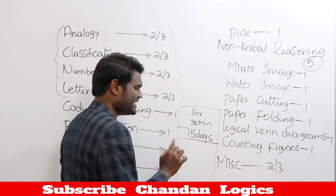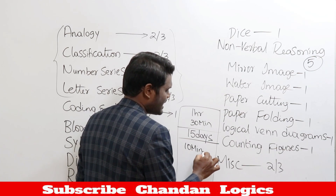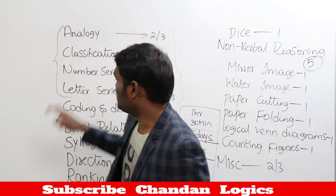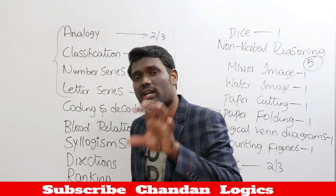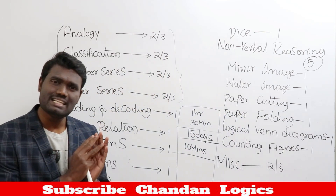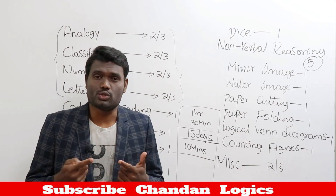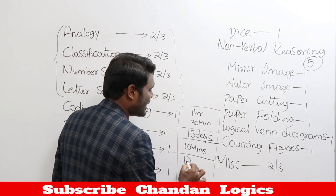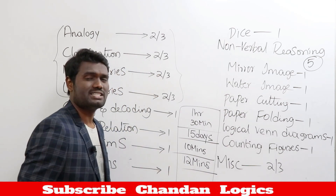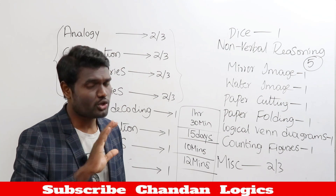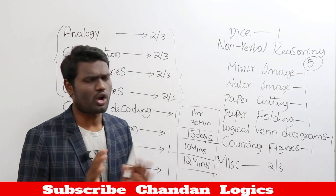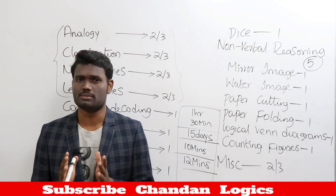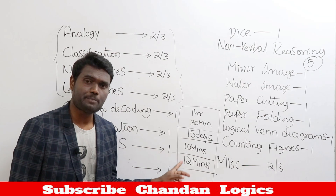After covering the syllabus, take at least a 10-minute reasoning test every day with random questions. In reasoning, you need spontaneity — you need to be able to answer quickly. These 25 reasoning questions should be solved in 12 minutes in the examination — not more than that. Spending 20 to 25 minutes on reasoning is a waste of time.